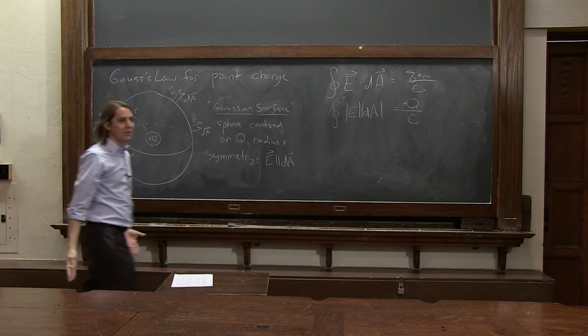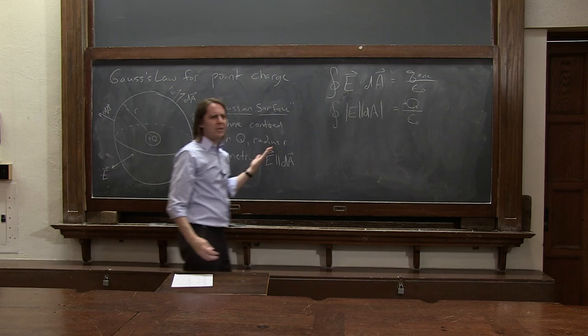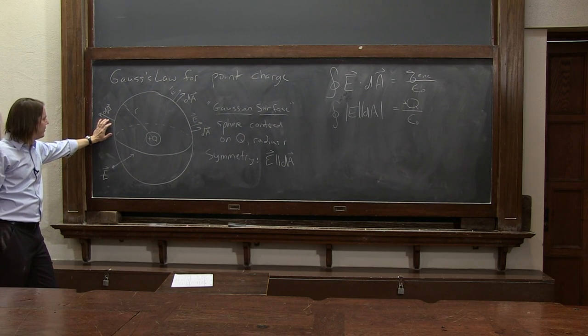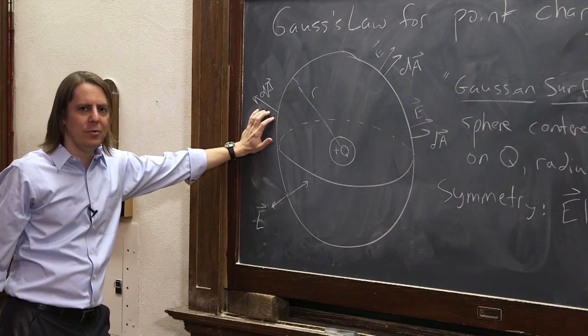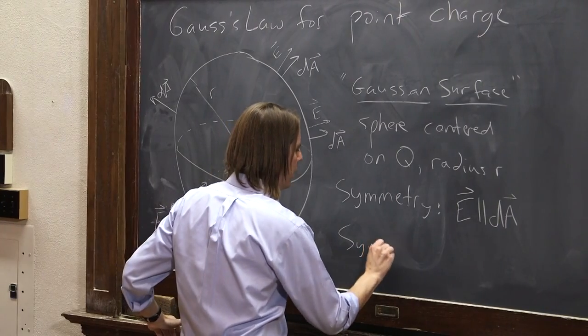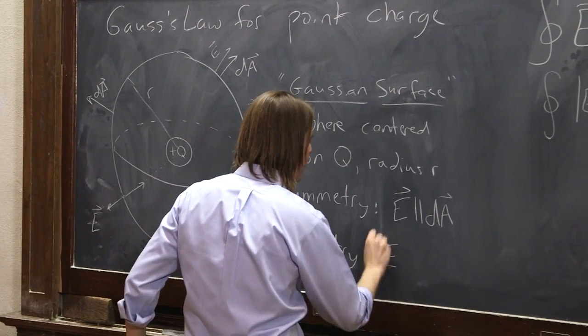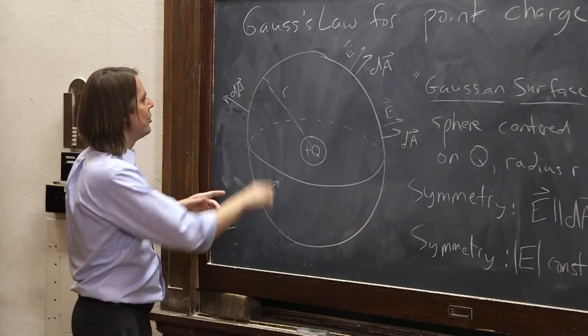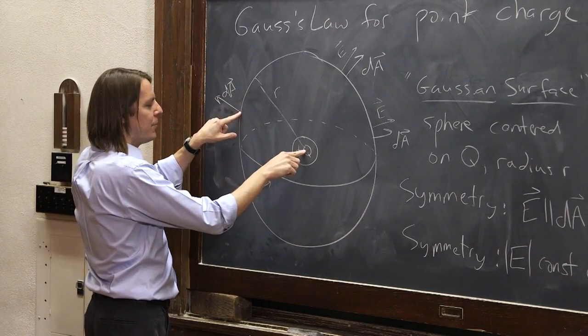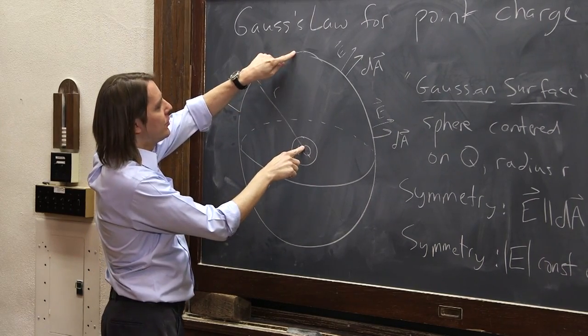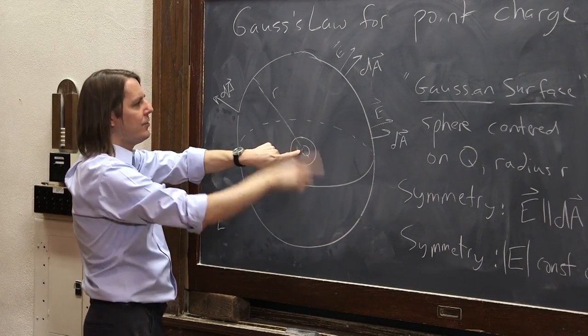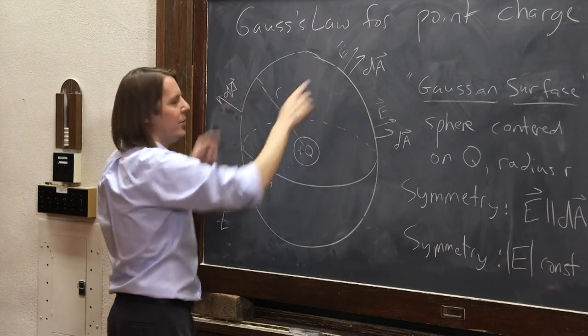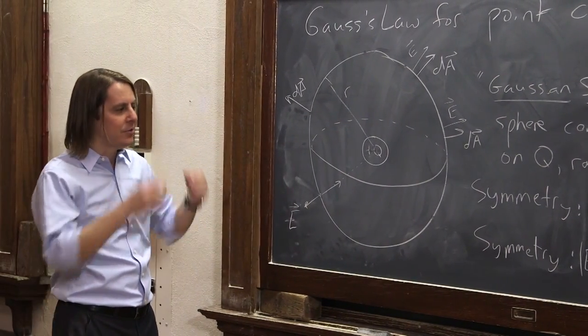But we're not done. We still can't do this integral because E could be a function of area. What else can symmetry tell us? Symmetry tells us that E magnitude is constant on the surface. Why? Because anywhere you go on the surface, you're at distance r from the charge. Anywhere you go is physically no different from any other place. There's nothing special about any place relative to another - they're all the same. So the E field has to be the same everywhere.